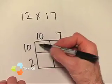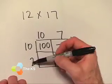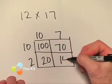10 times 10, 100. 10 times 7, 70. 2 times 10, 20. And 2 times 7, 14.